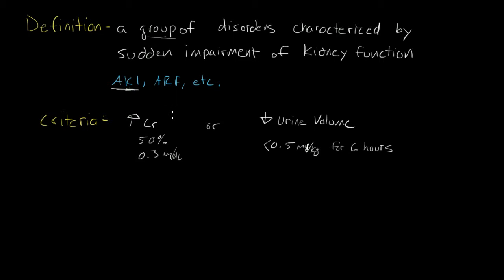The objective criteria for diagnosing acute kidney injury is either an increase in creatinine or a decrease in urine volume. The increase in creatinine can be an increase of 50% above your baseline or an increase in absolute values of 0.3 for a person with a presumed normal renal function. Decrease in urine volume is most easily defined as having less than or equal to 0.5 milliliters per kilogram in weight of urine output for a period of greater than or equal to 6 hours.